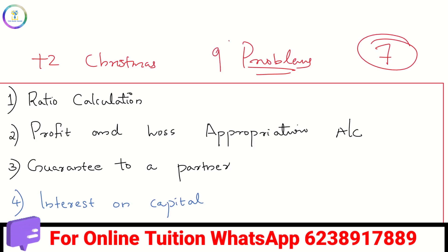Here we are going to study the important items in accountancy. The first thing is the ratio calculation. The ratio calculation is the sacrificing ratio, that is the new ratio, but we will study the gaining ratio. So we will study the ratio calculation.